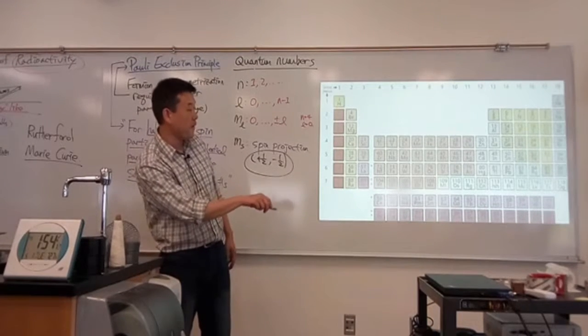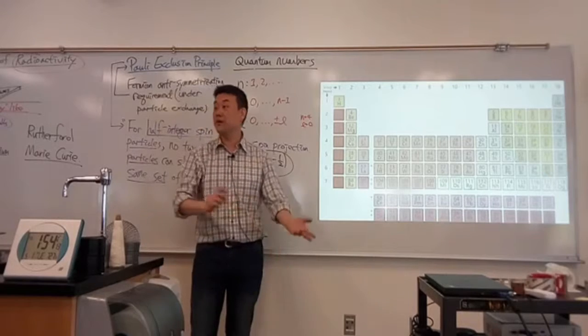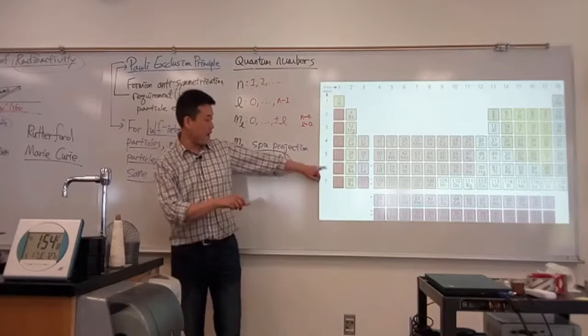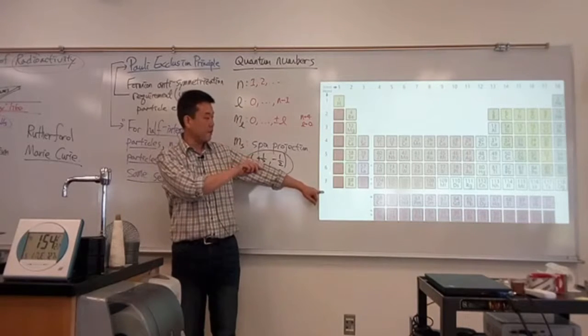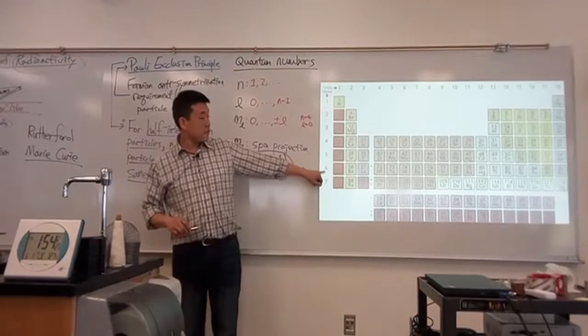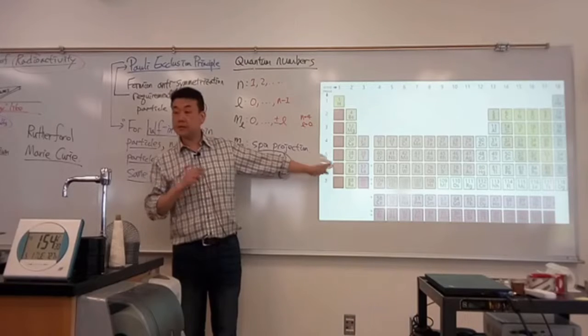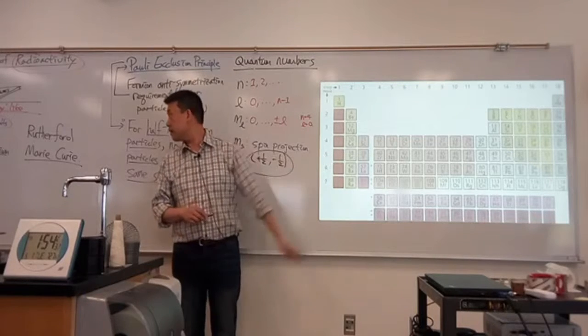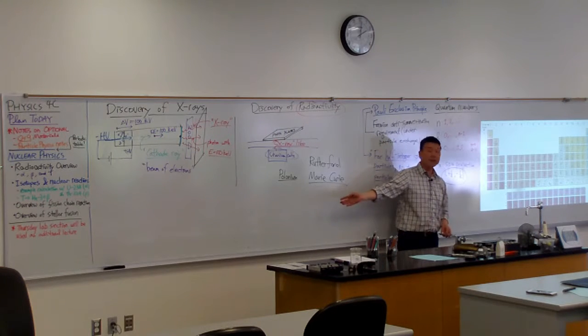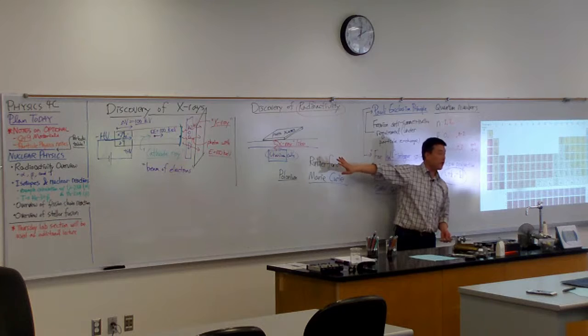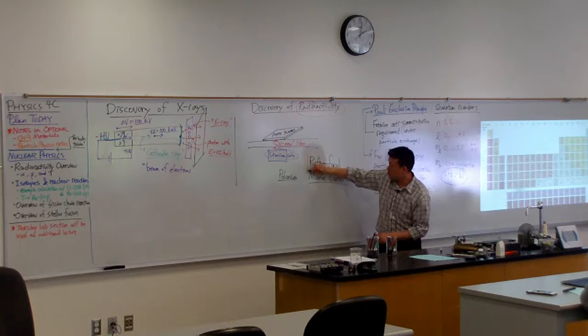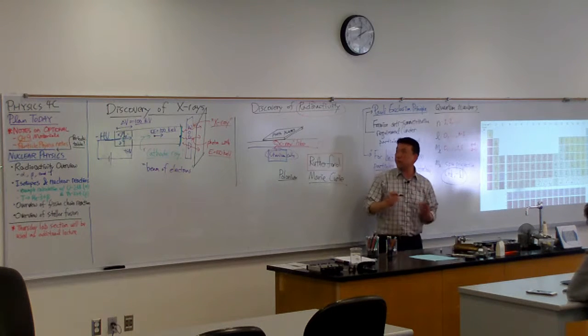Americium is a common alpha source used in your smoke detectors. A lot of these radioactive elements will be found here. Once they figured out this is something that happens, they started looking for other elements that have similar behavior. One of the main work done by Rutherford was he categorized these different rays coming from radioactive elements.